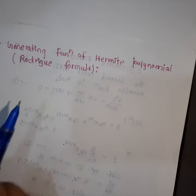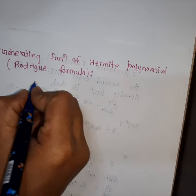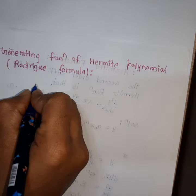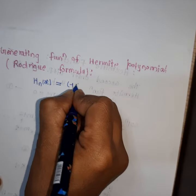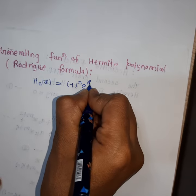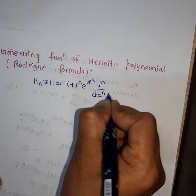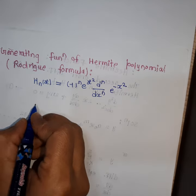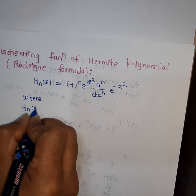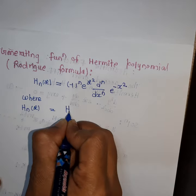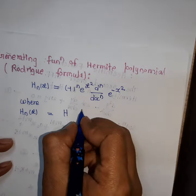The generating function of the Hermite polynomial, also known as Rodrigues' formula, is: Hₙ(x) equals (−1)ⁿ e^(x²) times d^n/dx^n of e^(−x²), where Hₙ(x) is the Hermite polynomial.